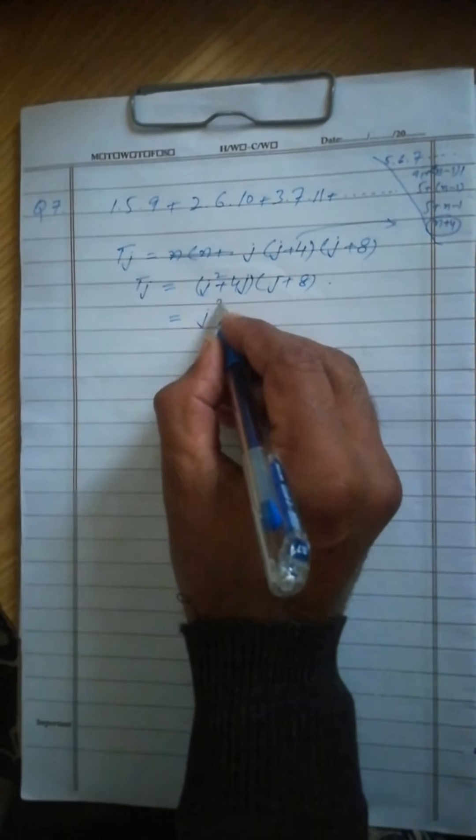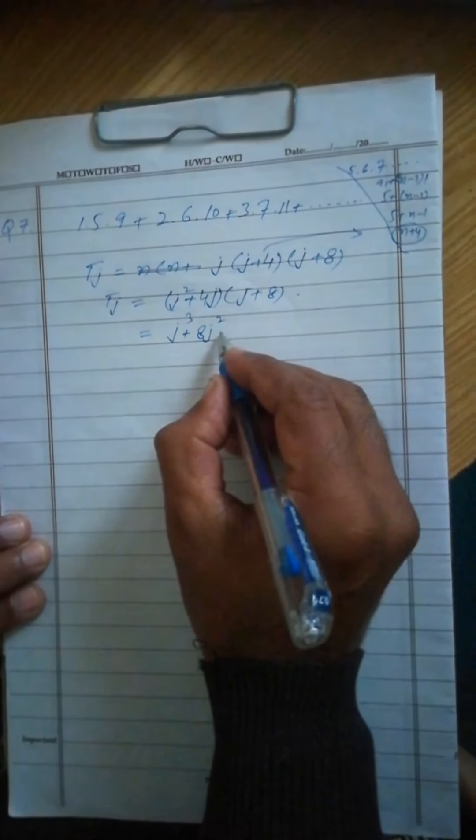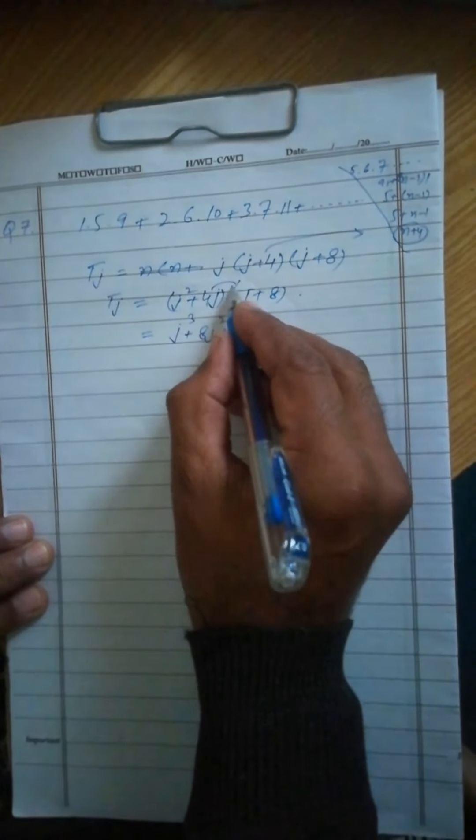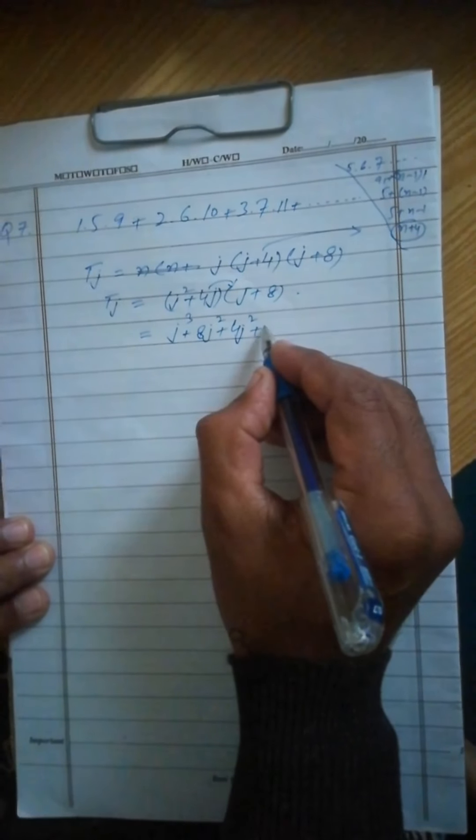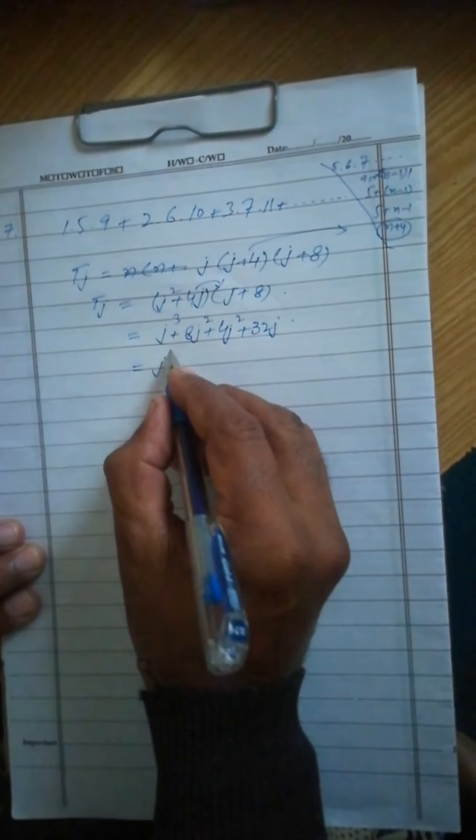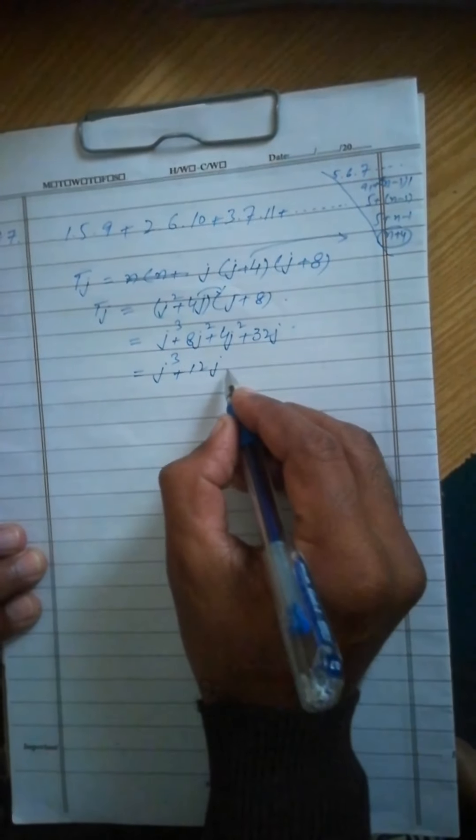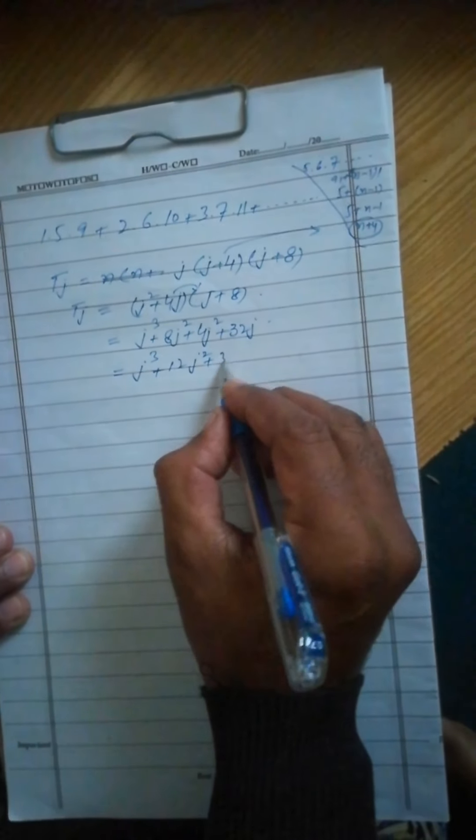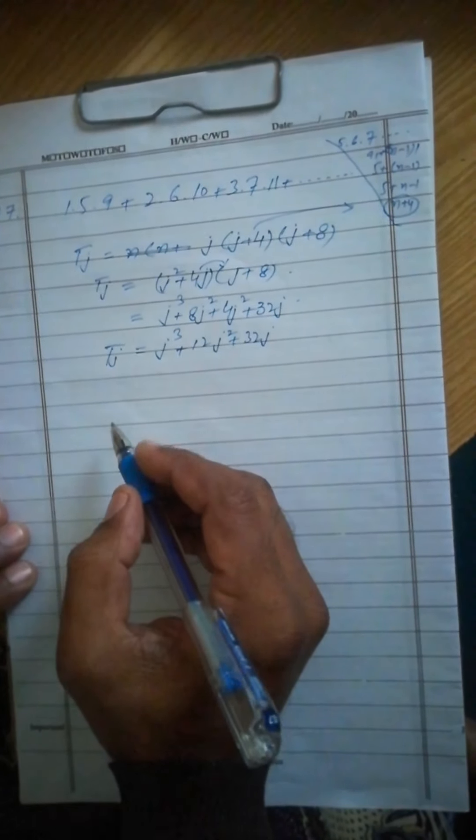Now multiply, so j²+4j+8. This is equal to j³+8j². Now multiply this 4j, so 4j²+32j. This is equal to j³ plus 12j² plus 32j.